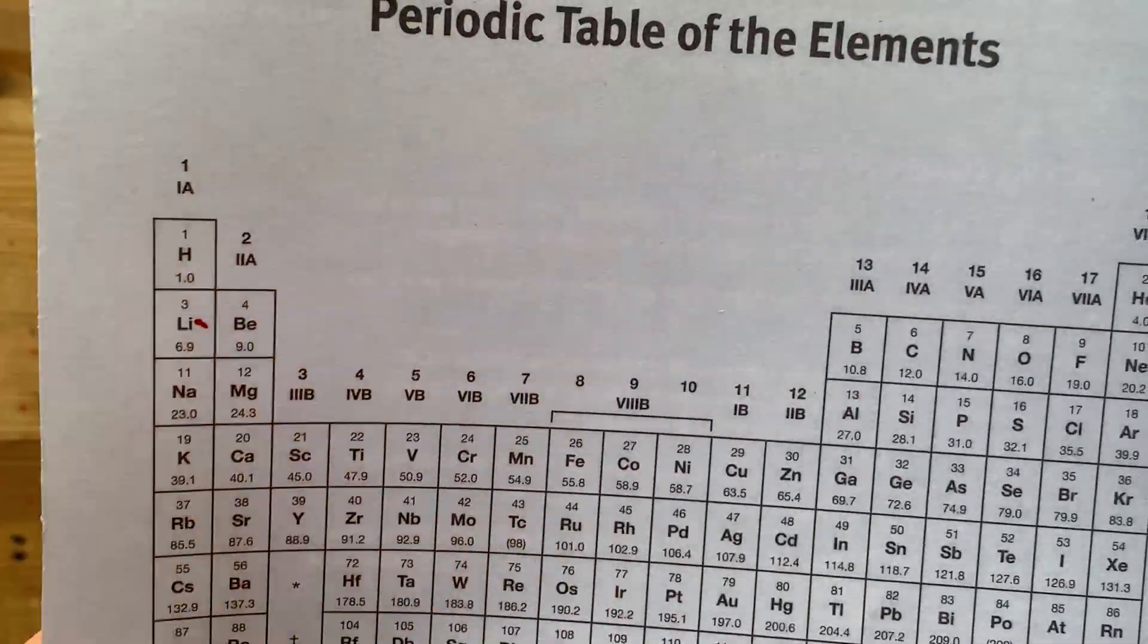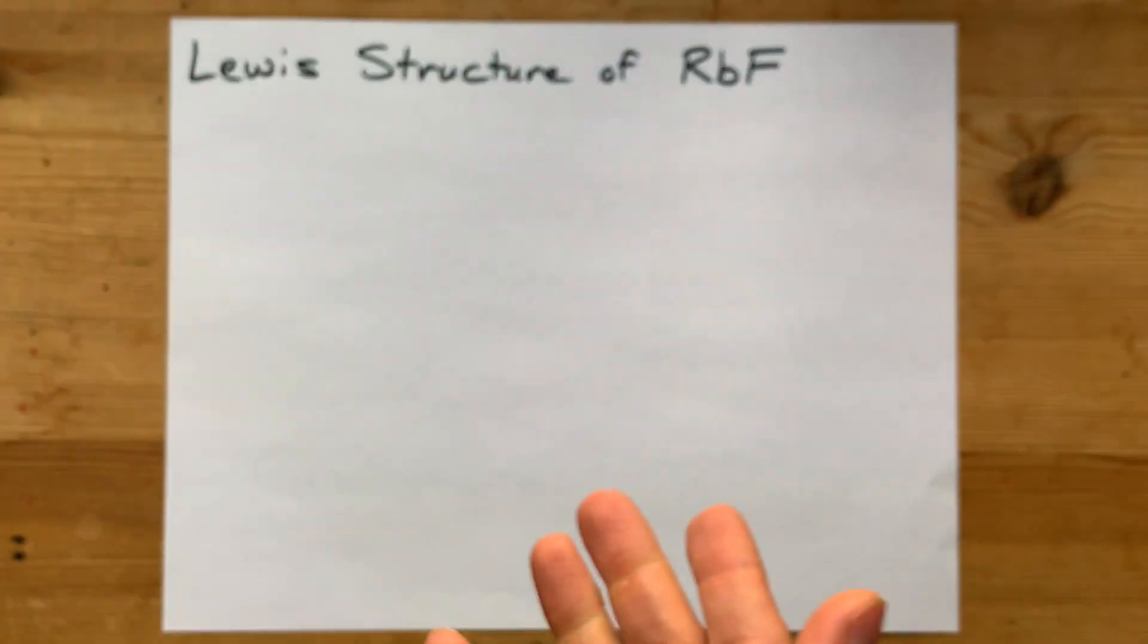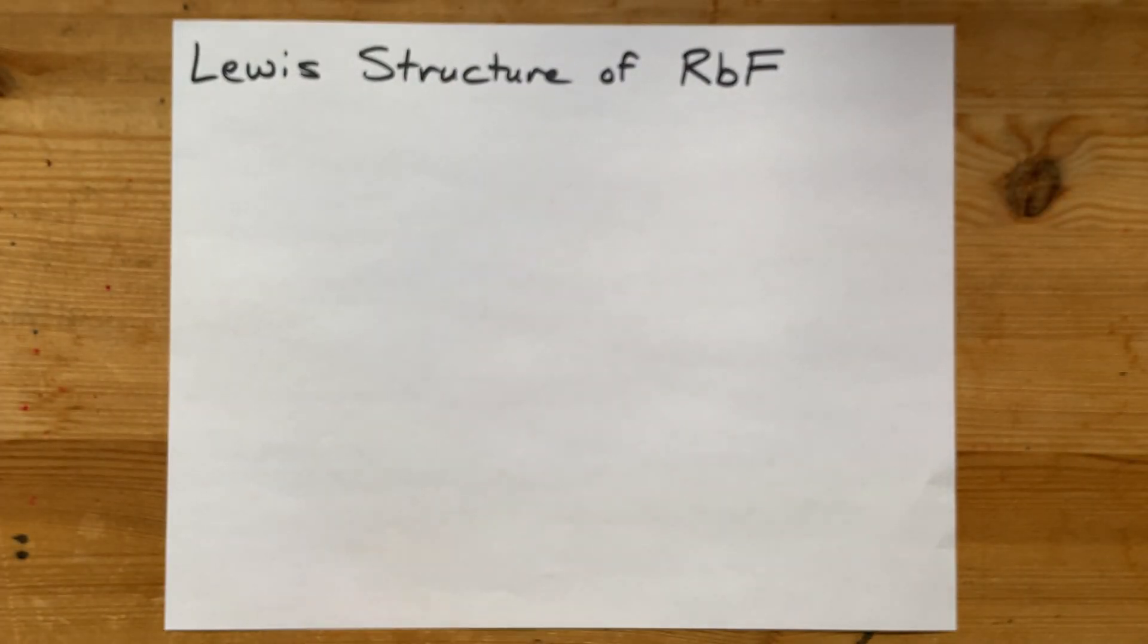Rubidium, an alkali metal. Fluorine, a halogen, or a non-metal specifically.